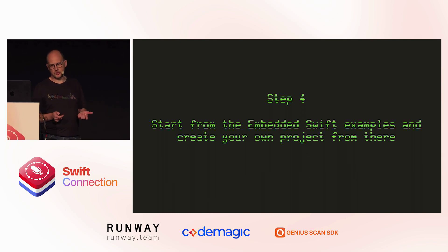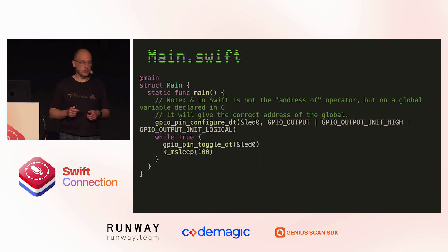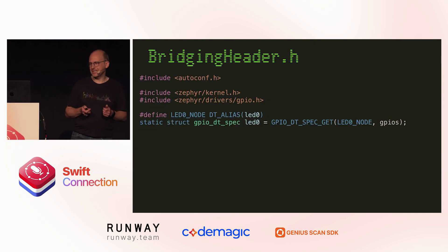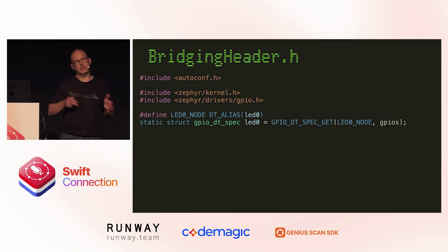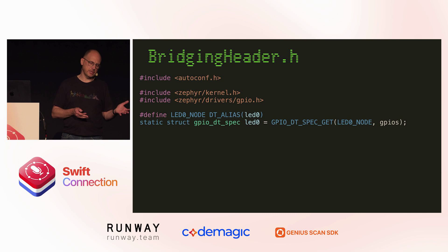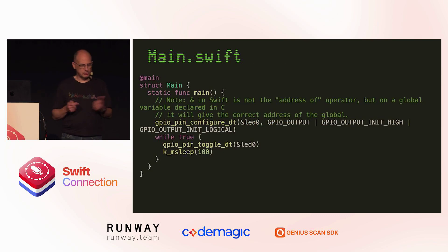Going further, you start with the examples provided by Apple. For instance, the blinking LED example looks like normal Swift code, except there is this GPIO pin configured with DT and LED zero. Where's that coming from? It's coming from the bridging header .h file — a standard C header file used by the Swift compiler's C interop to make available in the Swift world the C constructs. There are includes for the SDK, and LED zero is declared as a static variable — a structure representing the pin to which the LED is connected. But this doesn't look very Swifty; it's just Swift as glue code for C. So let's try to fix that.